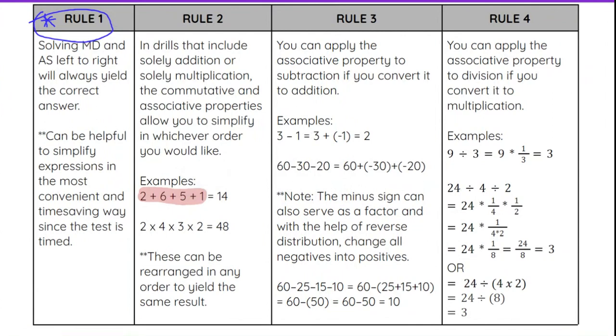If it is only addition, remember the commutative and associative properties allow us to switch up the order and switch up which ones we group together. No matter what, you will get 14 when you add those together. For 2 × 4 × 3 × 2, because of associative and commutative properties of multiplication, we can change up the order or change which numbers we multiply and group together. No matter what, you will get 48.